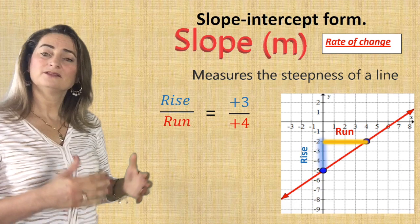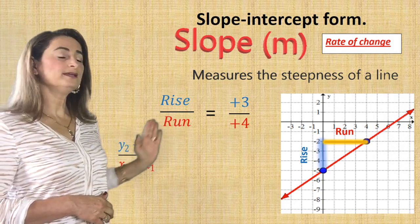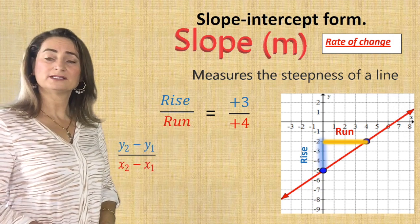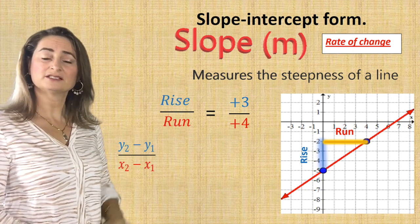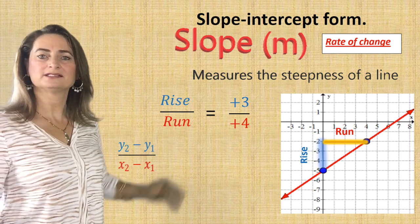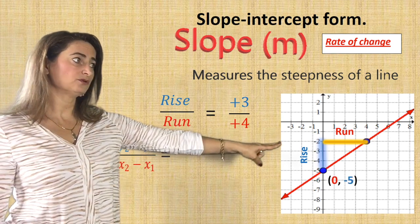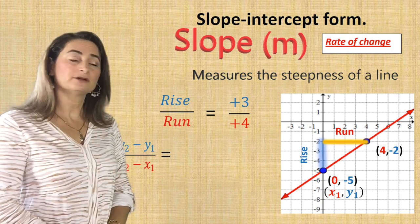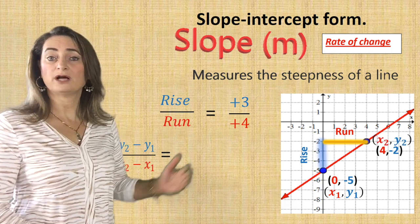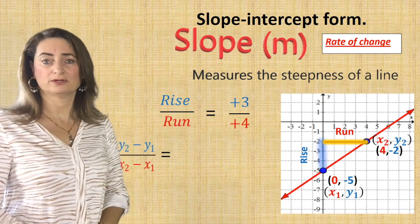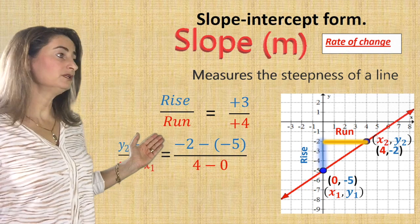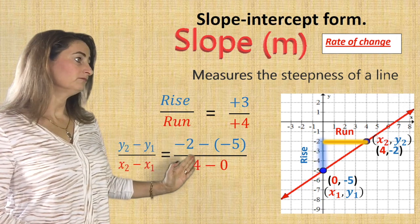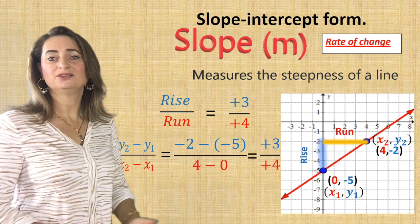So the rise is 3 and the run is 4 — that is the slope 3 over 4. There's another way to do this, which is the change in y divided by the change in x, and the change means minus. So y2 minus y1 over x2 minus x1. Name the first coordinate (0, negative 5) as x1, y1, and the second coordinate (4, negative 2) as x2, y2. Now substitute: negative 2 minus negative 5, divided by 4 minus 0. Simplify that — you get 3 over 4.